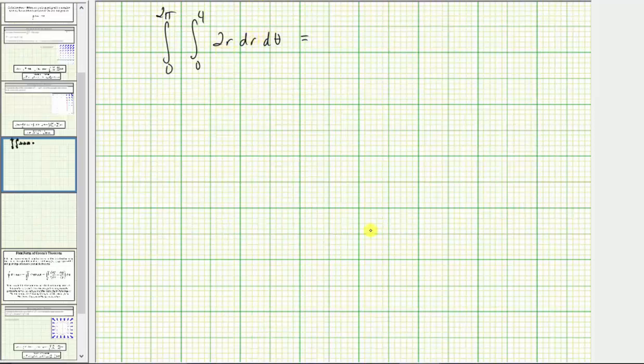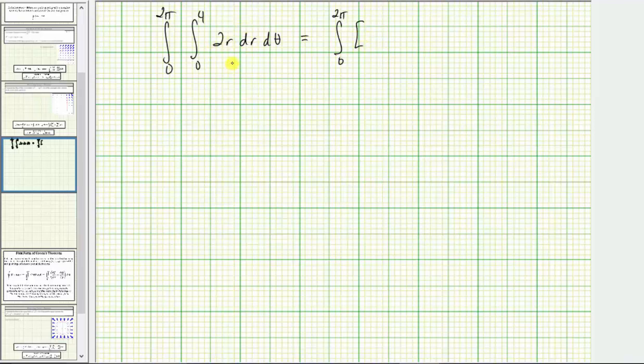We first integrate with respect to r, which would be two times r squared divided by two, which simplifies nicely to r squared. And now we need to find big F of B minus big F of A, which is four squared minus zero squared, which is 16.